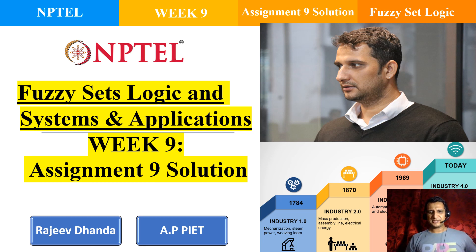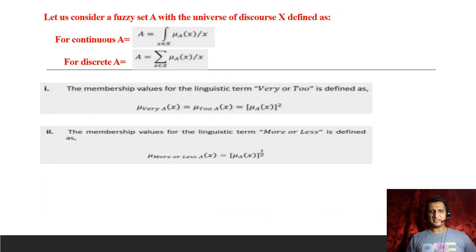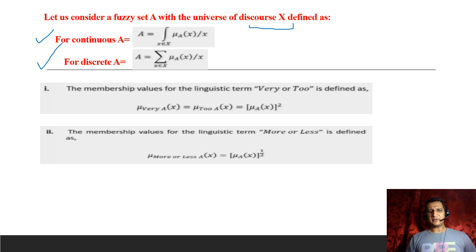Hello everyone, today I will discuss Assignment 9 for the course Fuzzy Set, Logic and Systems and Applications. In this assignment there are three types of questions. Questions 1 to 8 are of similar type, and questions 9 and 10 are of a different type. We are given a discourse capital X, and for continuous and discrete sets we are having this formula.